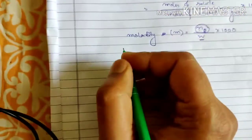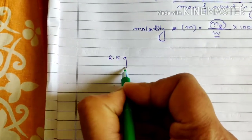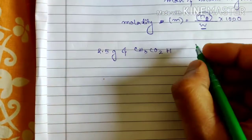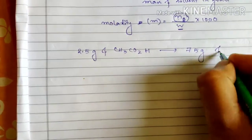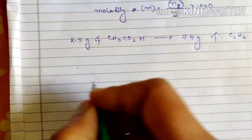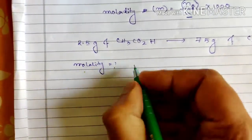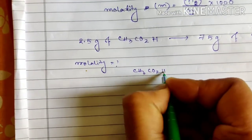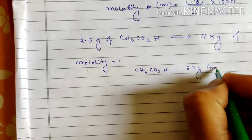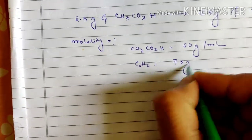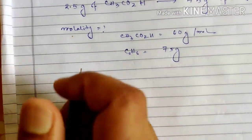Let us work a problem on molality. Suppose we take 2.5 g of ethanoic acid (CH3CO2H) and dissolve it in 75 g of benzene (C6H6). We have to calculate the molality. The molar mass of CH3CO2H is 60 g/mol. The mass of benzene is 75 g.